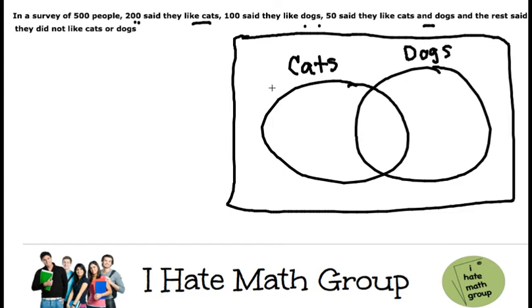And I'm going to make another video where actually you will have three circles. But how do we do this one? The first step is to figure out who likes cats and dogs at the same time.